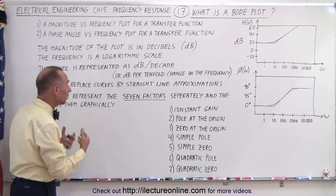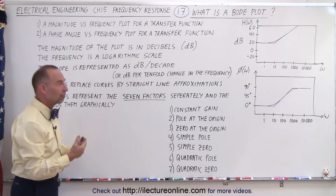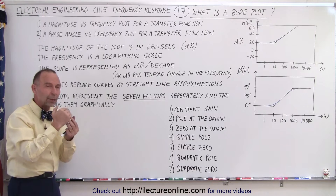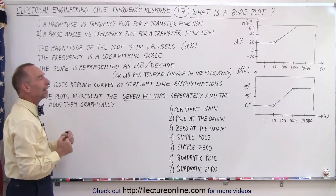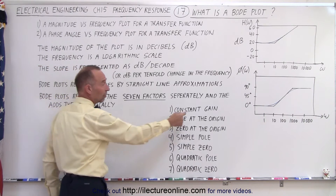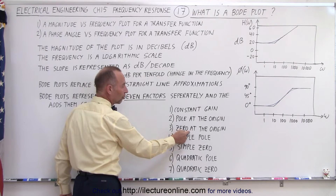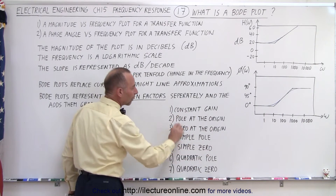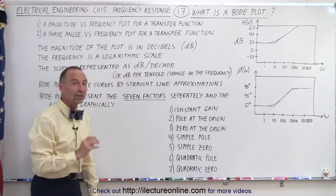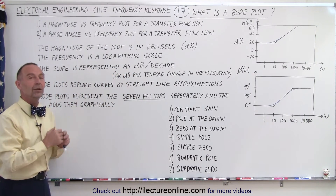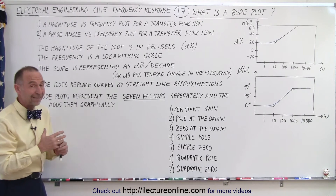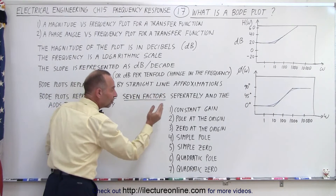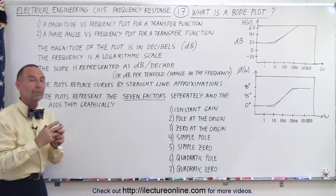Bode plots handle seven factors found in any typical transfer function equation. We handle each factor separately, one at a time, then graphically combine them. The seven factors are: the constant gain, the pole at the origin, the zero at the origin, the simple pole, the simple zero, the quadratic pole, and the quadratic zero. We'll learn how to draw Bode plots separately for each of these seven factors and then how to combine them into a single Bode plot. We take a transfer function, pull it apart, and evaluate it one step at a time for each factor before combining.